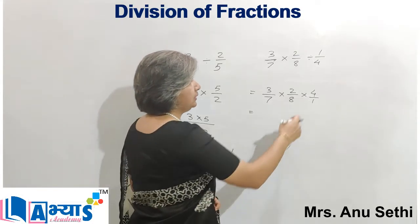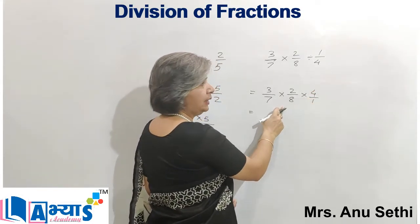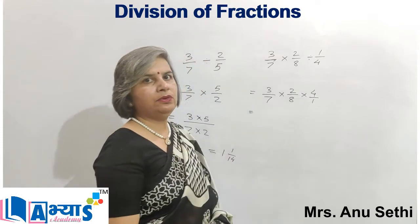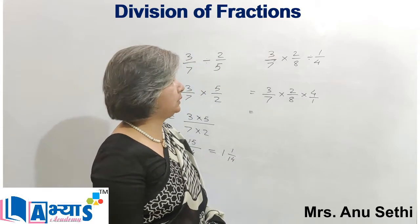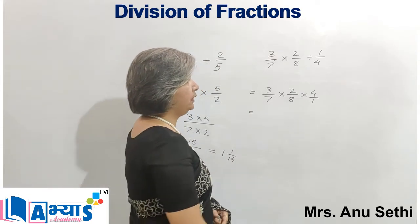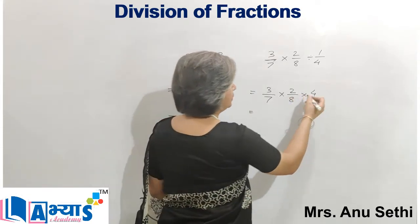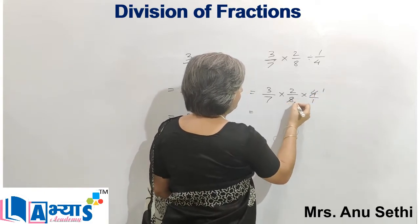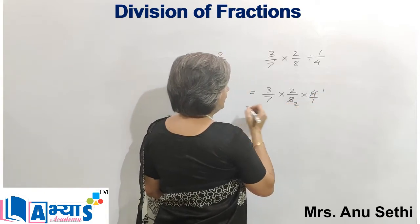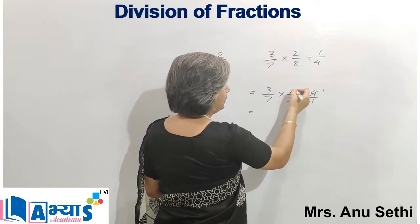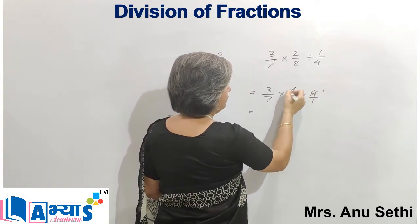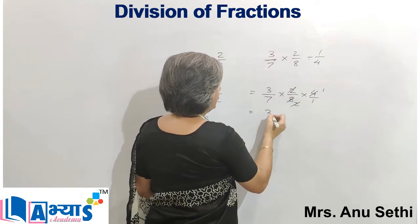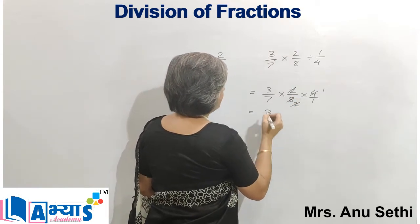I see that 4 is in the numerator and 8 is in the denominator, and we know that 4 twos are 8, so we will cancel out: 4 ones are 4 and 4 twos are 8. Now this 2 and this 2 are the same, so we will again cancel out. So the answer will be 3 by 7.